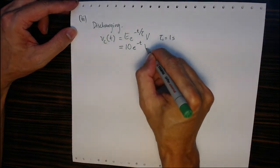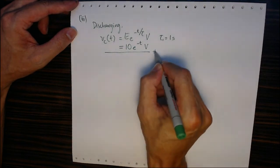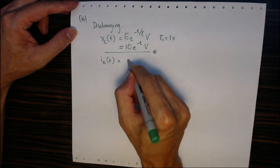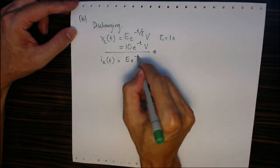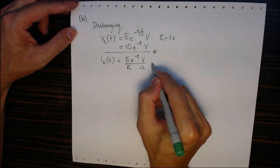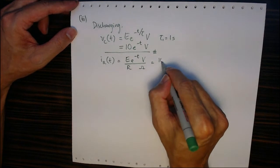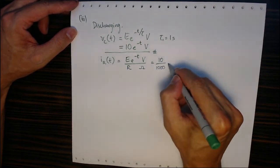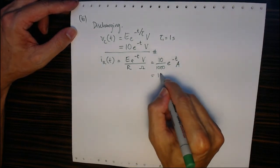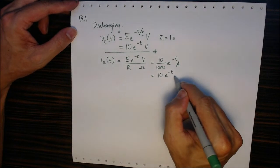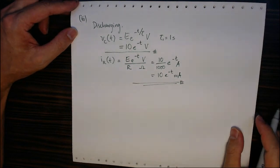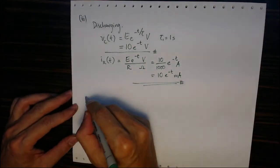Similarly, for IR(t), it equals E·e^(-t)/R, which gives 10 divided by 1000 ohms times e^(-t) amperes, or 10e^(-t) milliamperes. This is the expression for the current.